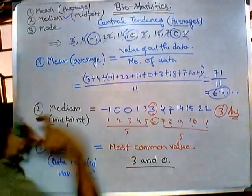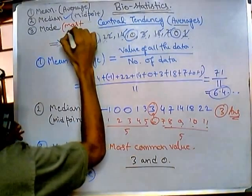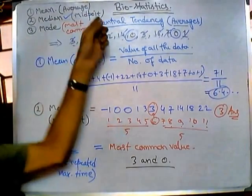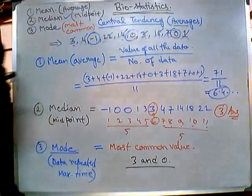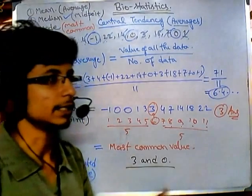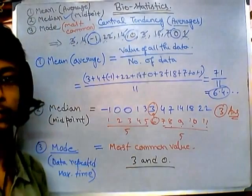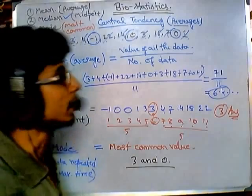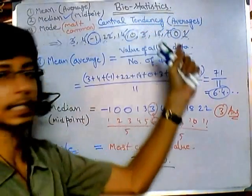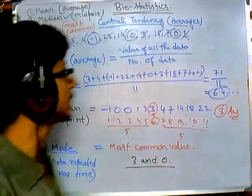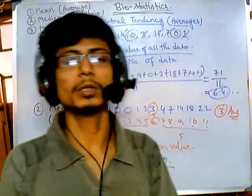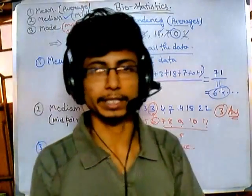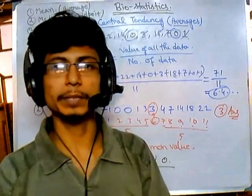To summarize: mean means arithmetic average, median means the exact midpoint of the data set, and mode is the most common or most frequent value in the data set. These are the three different calculations of central tendency for non-frequency or simple data. In future videos we will cover frequency data and grouped data, and find these three measures for those more complicated data types.